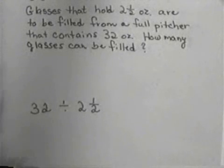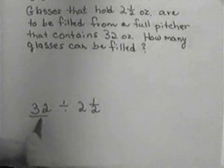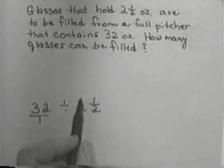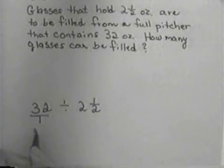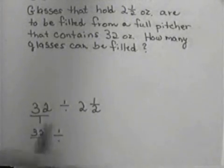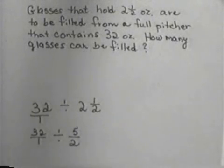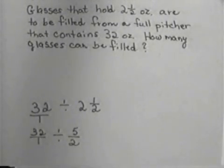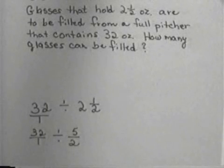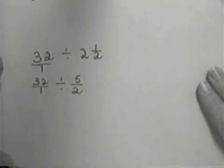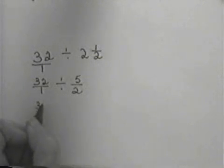So in order to work the problem I need to put a one under the 32 and I need to make this into an improper fraction. So I have 32 ones divided by five halves. And then it's tempting to reduce, but remember you can't reduce in division, has to be multiplication before we can reduce. So we need to find the reciprocal of our second fraction.